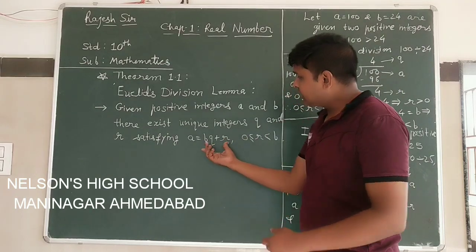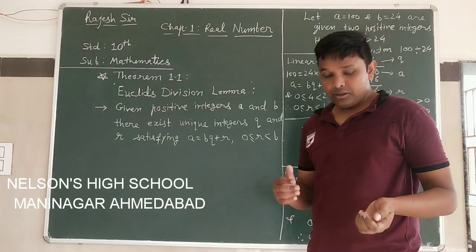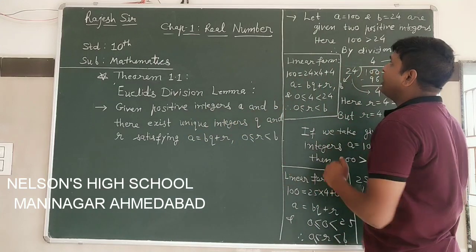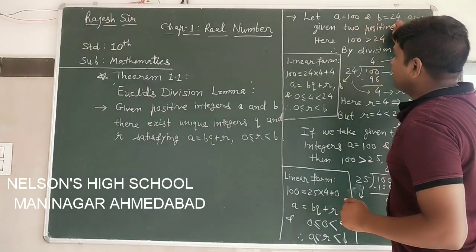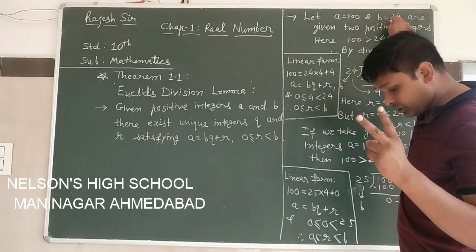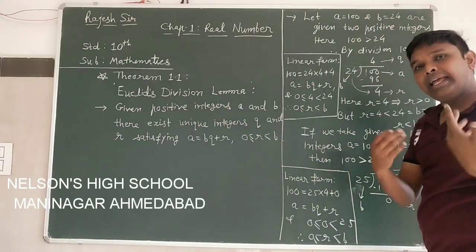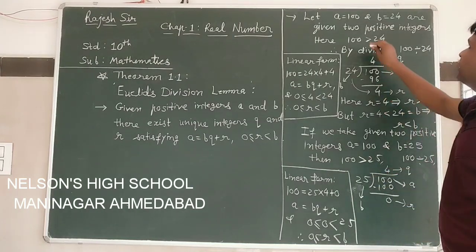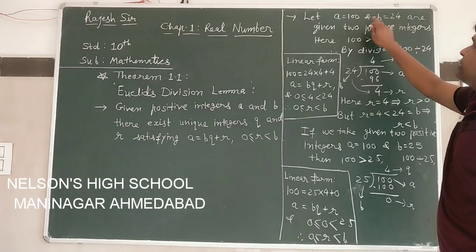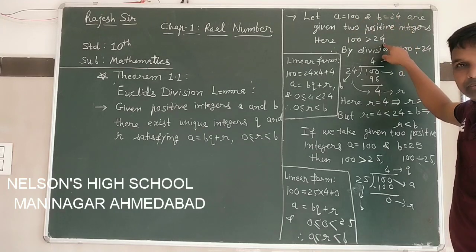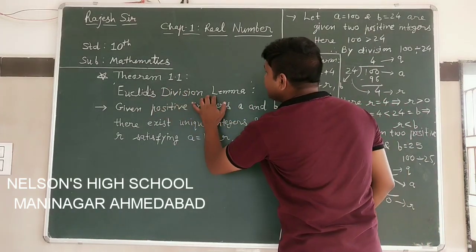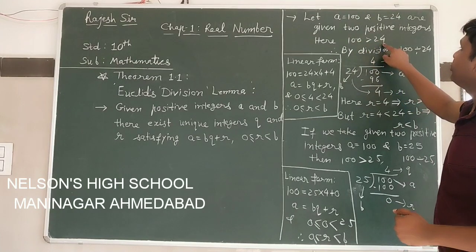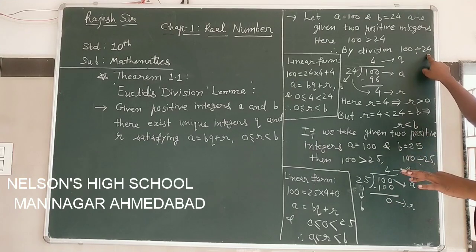In this statement, it looks like — from where does this form come and what is this relation? To understand it, we take some examples. I have taken a equals 100 and b equals 24 as two positive integers, as given in the statement. You can take any two positive integers; it is not necessary to take 100 and 24. Now we have to see which positive integer is greater. Here, 100 is greater than 24. Since the heading is Euclid's Division Lemma, division comes into this.